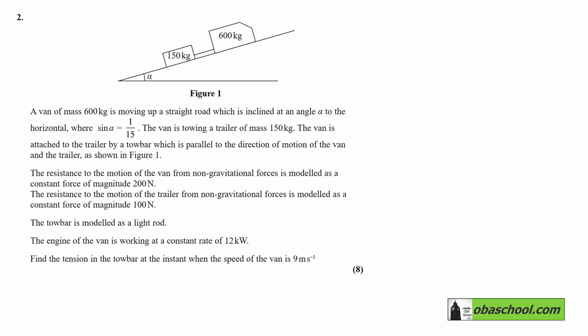So let's start with P equals F V. So 12 kilowatts, that's 12,000, is equal to 9 F when V is equal to 9. And that makes F equal to 4000 over 3 newtons. So that's the force from the engine.